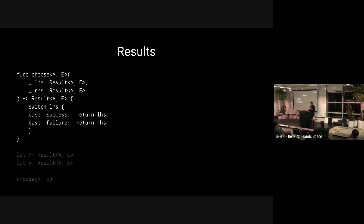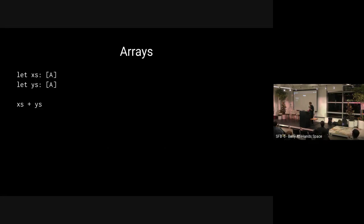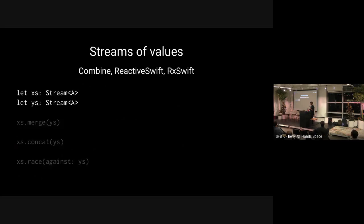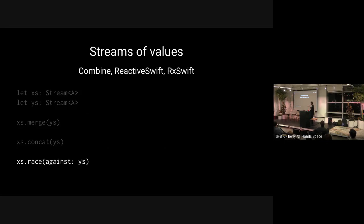Optionals we should allow because we can coalesce them together. Results we should allow because we can implement a function that takes two results and returns the first successful one — a generalization of null coalescing. Arrays can be concatenated, dictionaries can be merged. Any reactive library — Combine, ReactiveSwift, RxSwift — comes with merge operations, and some support even more exotic composition like concatenation, where once one stream finishes the next starts, or racing two streams so the first to finish wins.